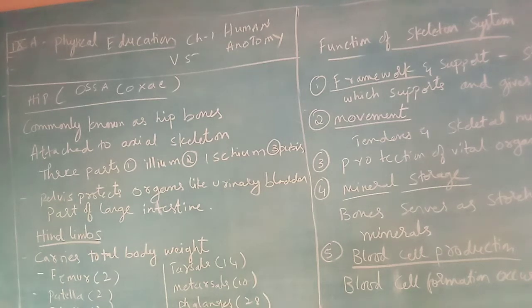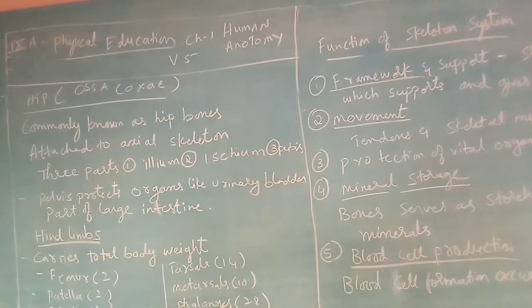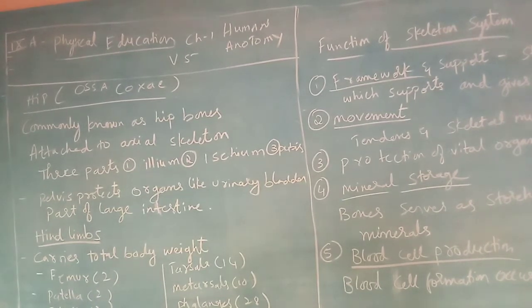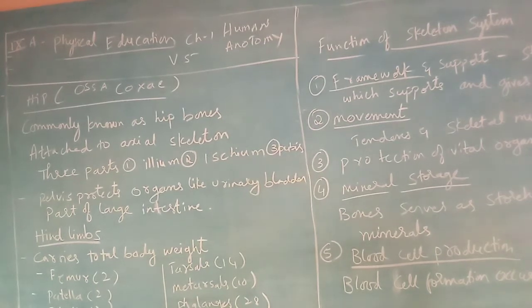Good morning, children. Today we are going to start our physical education class — chapter one, human anatomy. In the previous class we discussed the spinal cord in human anatomy, and we saw the different parts, regions, and the vertebrae of each region and their special characteristics.